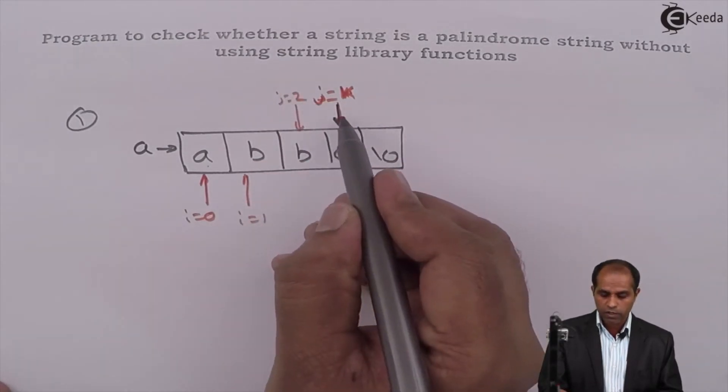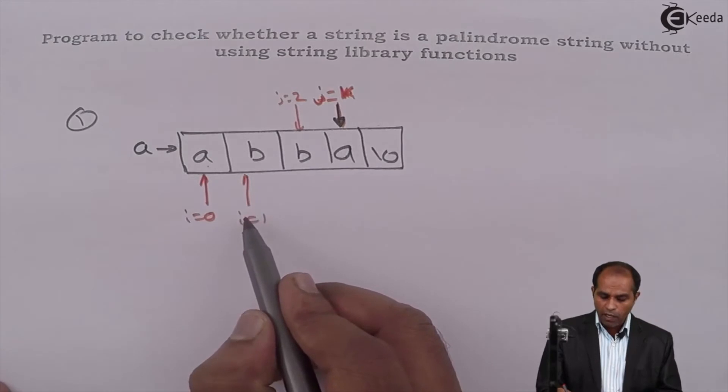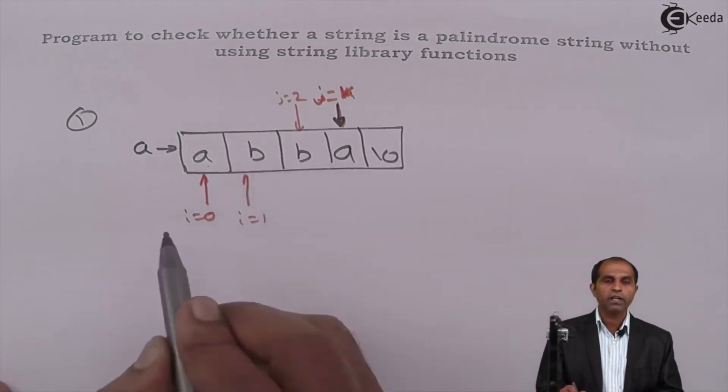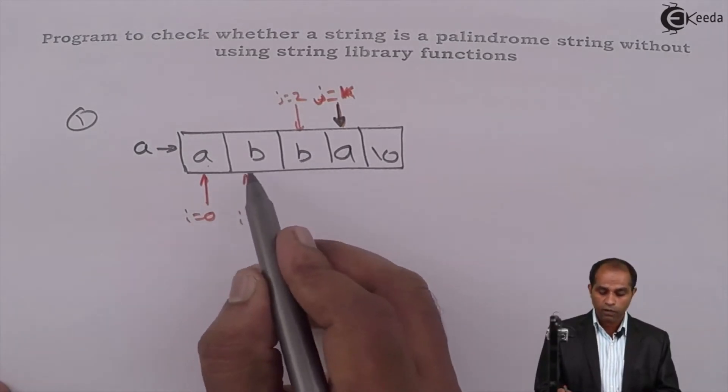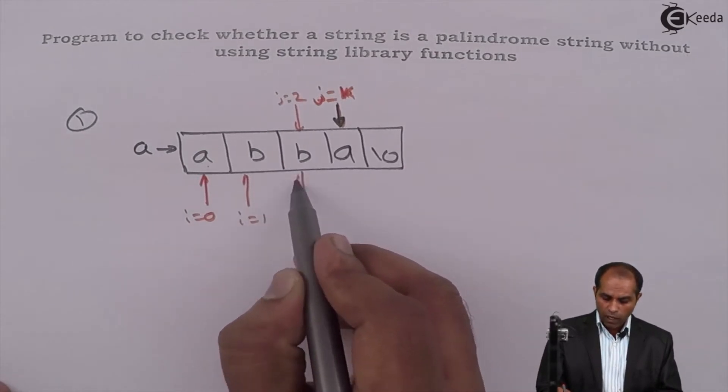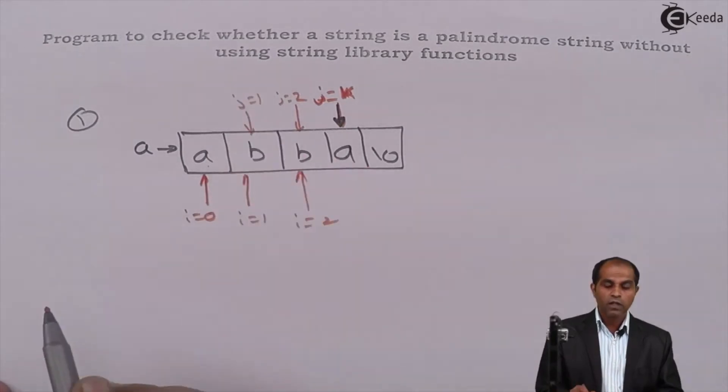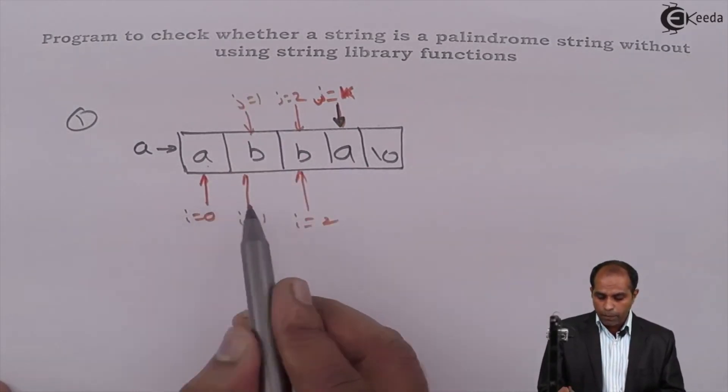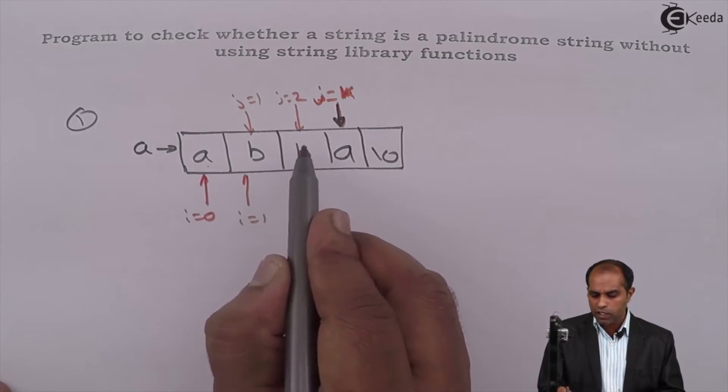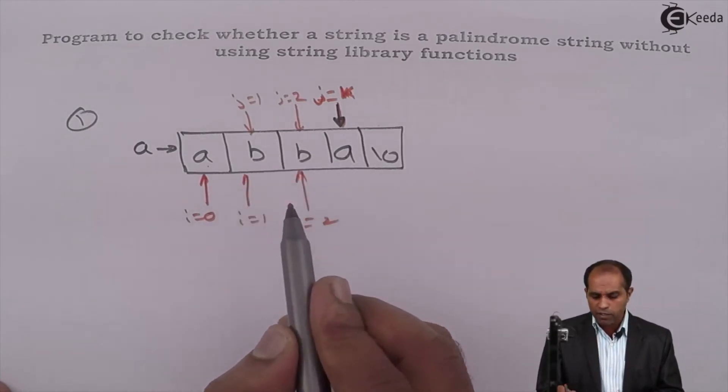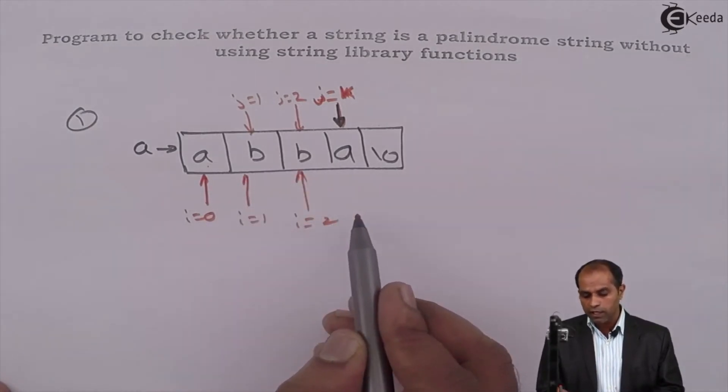Initially j was 3, now becomes 2. a[i] should be compared with a[j]. Again they are matching. If they are matching, continue. Once I continue, i becomes 2 and j becomes 1. Now see, prior to this point i was lagging, j was leading. At this instant, your i is leading and j is lagging.